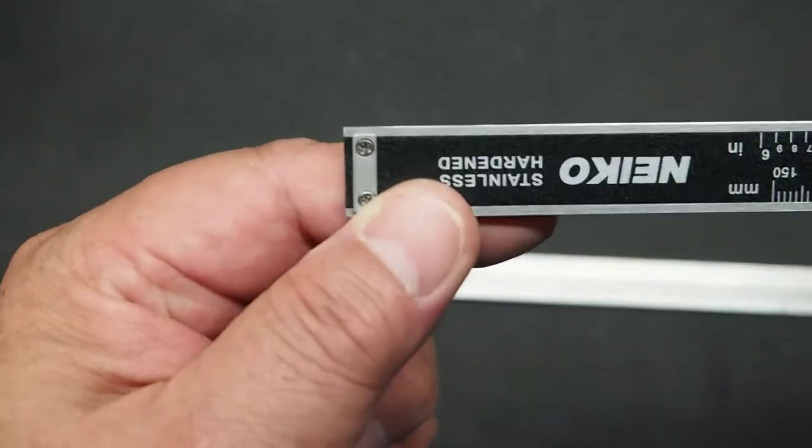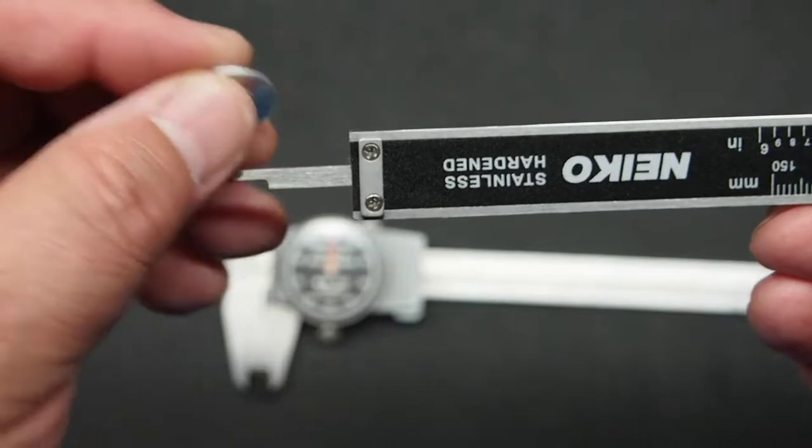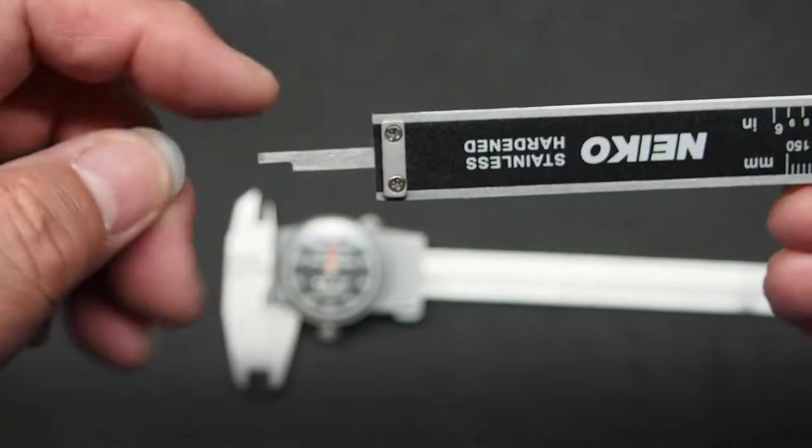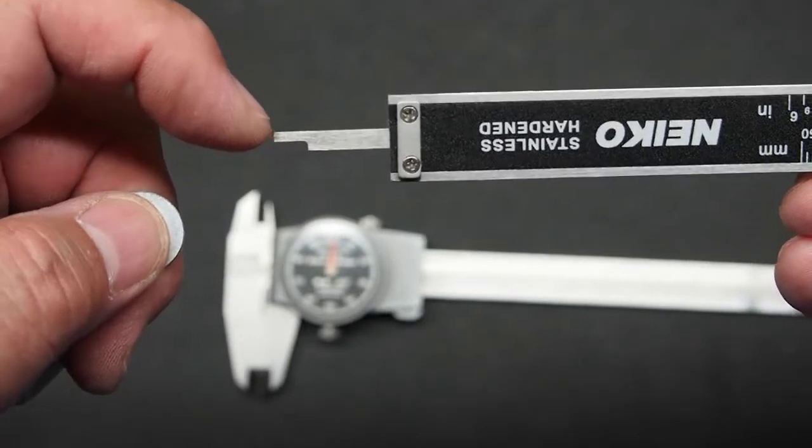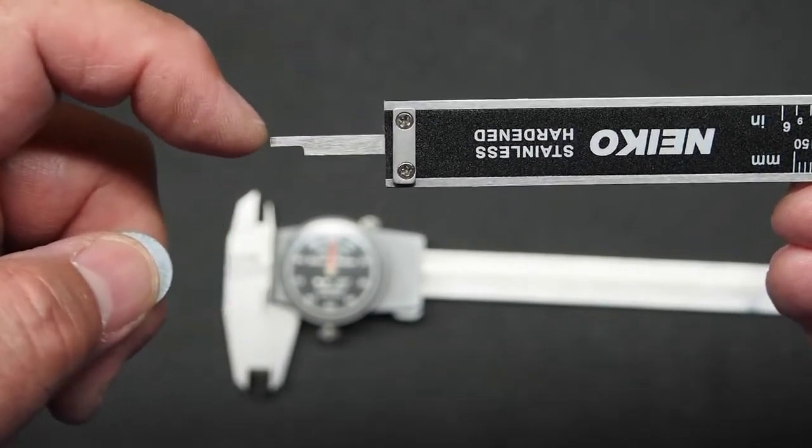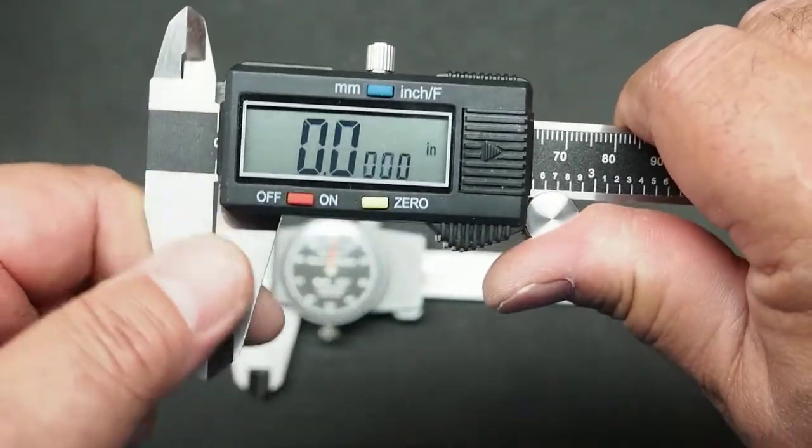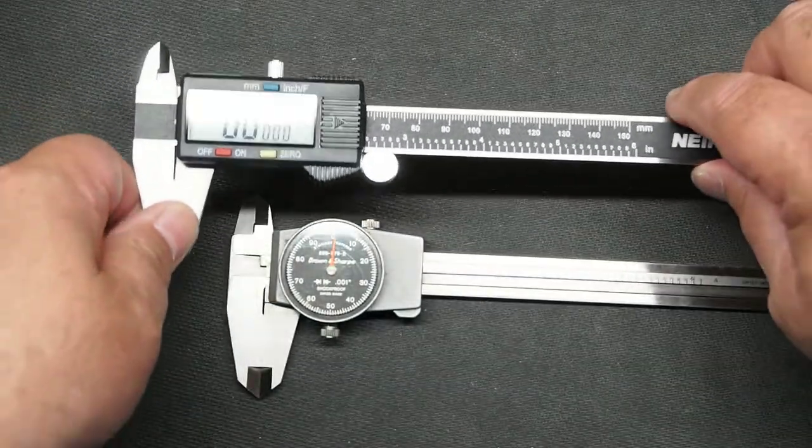The other thing is these have and all of them do have a depth measurement capability. So if you want to measure the depth of a hole or the depth of a step, like when you're doing woodworking, if you've got a rabbet or something that you're cutting, you want to measure how deep it is. Really good for that. So these are the calipers that I'm talking about.